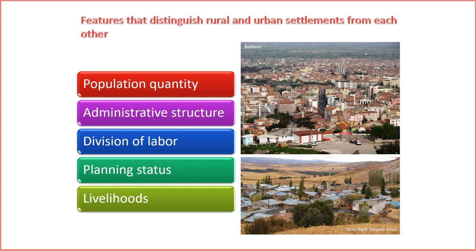4. Planning Status. The level of planning and organization distinguishes rural and urban settlements. Urban areas typically exhibit more comprehensive planning, with structured layouts, zoning, and infrastructure development. Rural areas may follow more organic growth patterns and have a less formalized planning status. 5. Livelihoods. Livelihoods in rural and urban settlements are shaped by distinct economic activities. Urban areas thrive on diverse economic sectors including commerce, industry, and services. In rural settings, agriculture often dominates the economic landscape, influencing the lifestyle and livelihoods of the community.